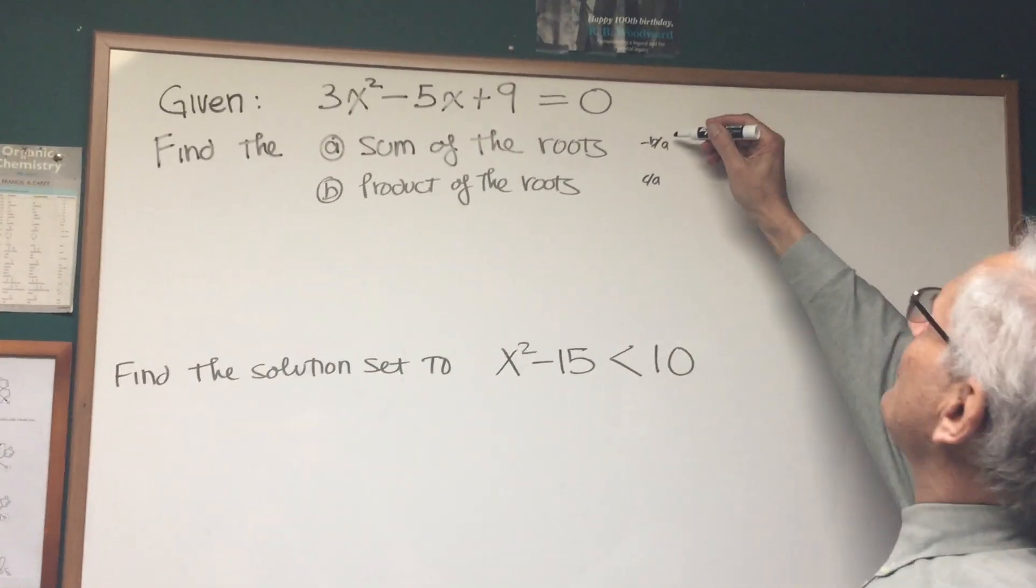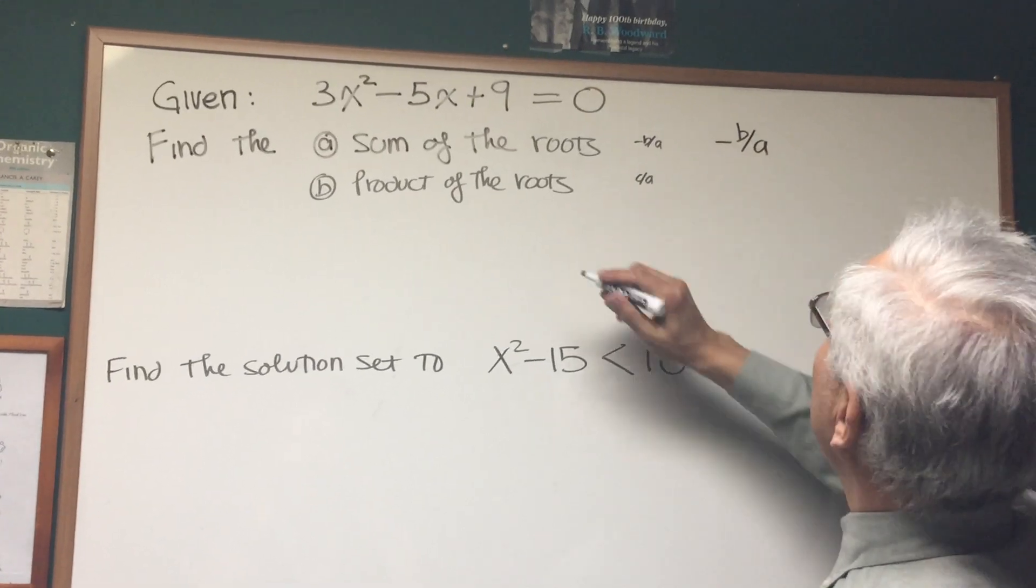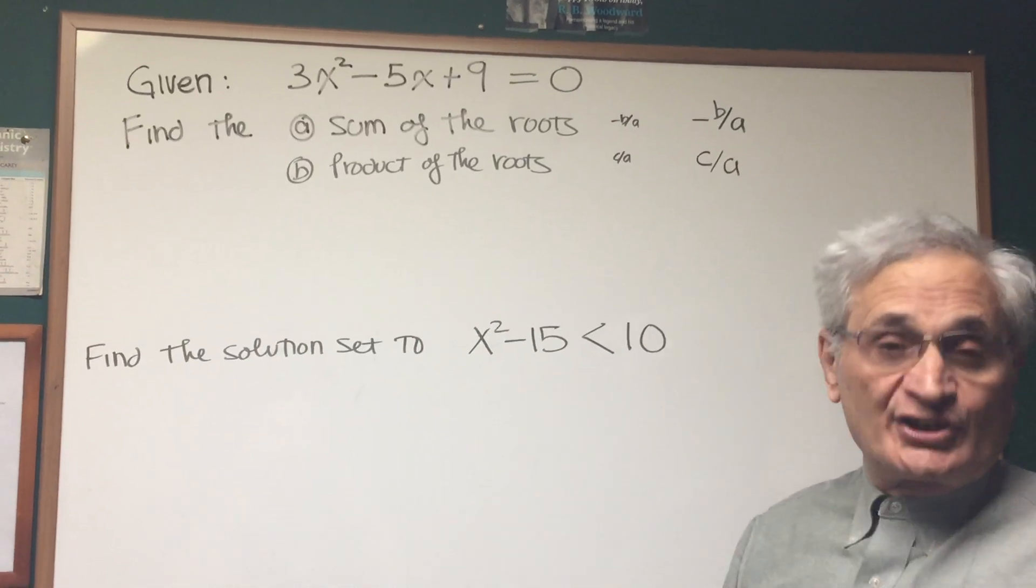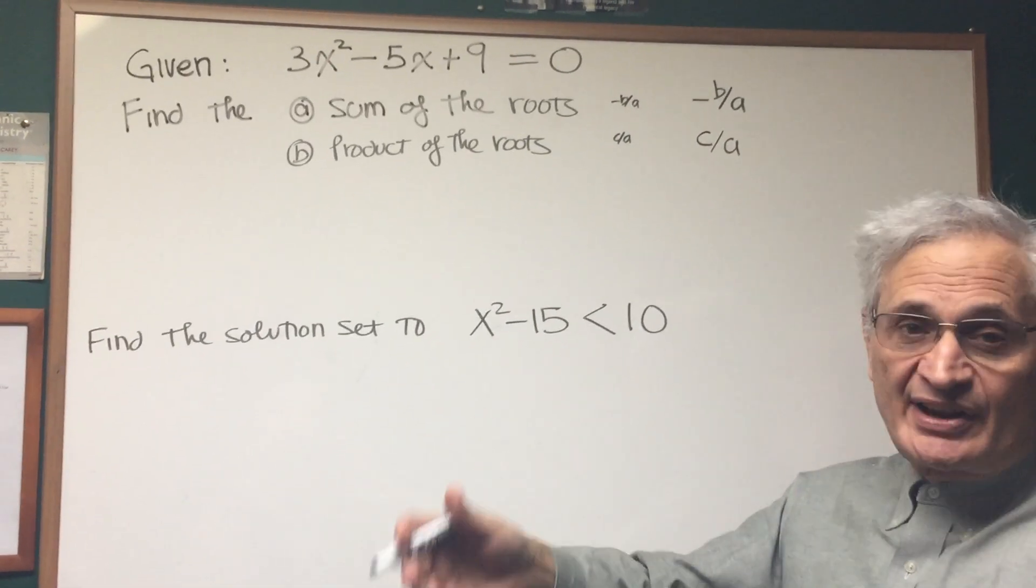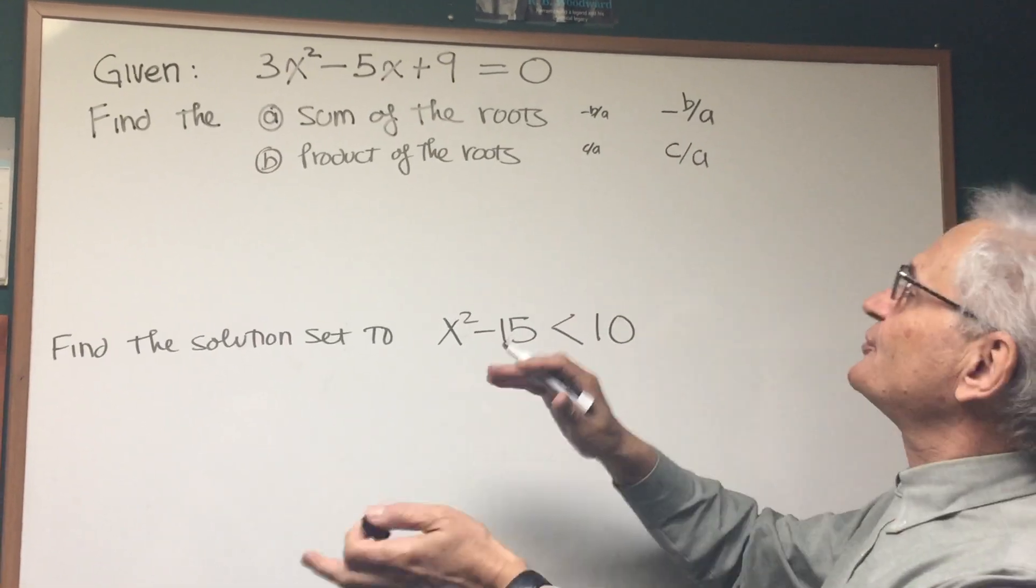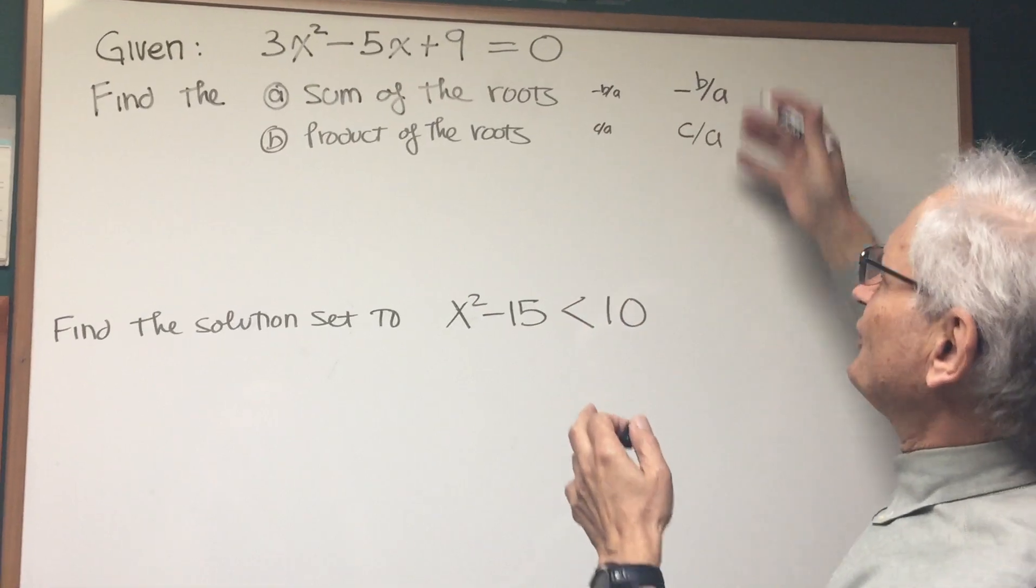The sum of the roots is given by the formula -b/a, and the product of the roots is given by the formula c/a, which you can derive if you want. You can just write out the quadratic formula and take the product of the two solutions and take the sum of the two solutions. You'll see that they simplified to this.